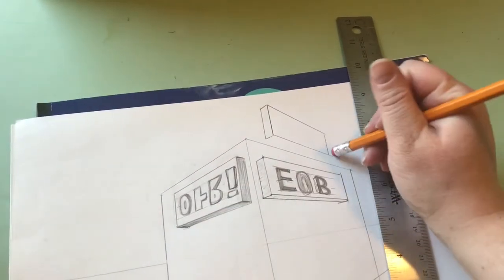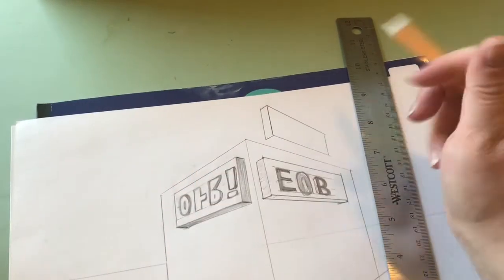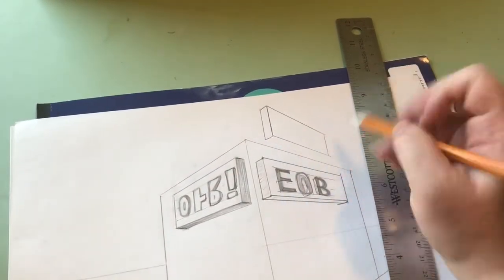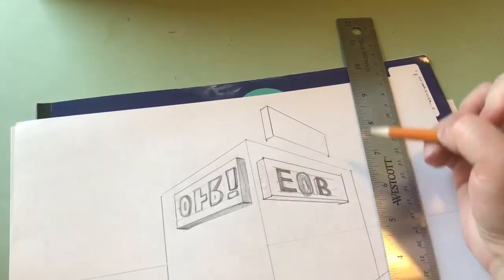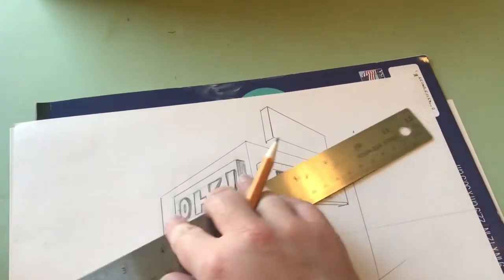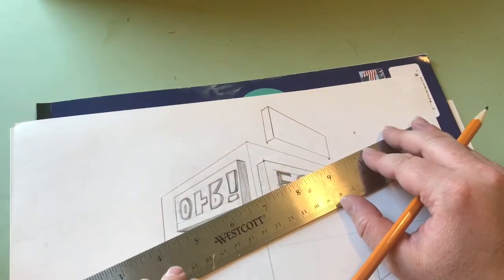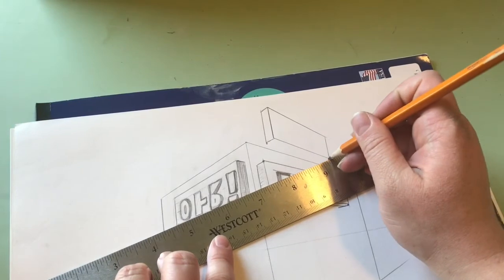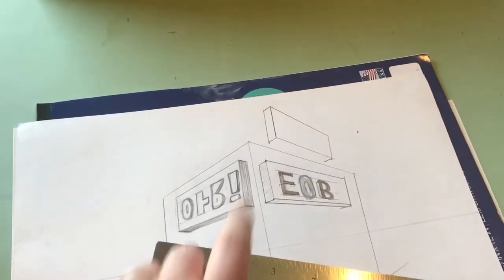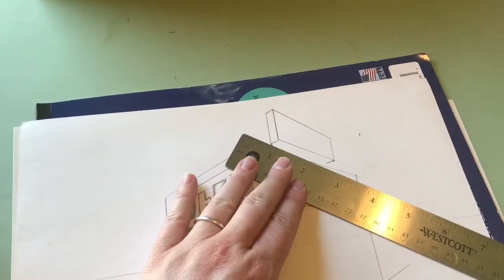And then I want to make it look three-dimensional. We have our front and the side, but not a bottom. So I take the bottom of the left and right side and do opposite vanishing points. So the right one, I go down to the left. The left one, I go down to the right.